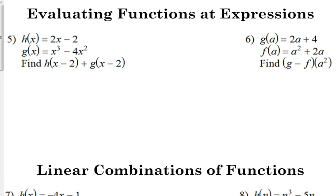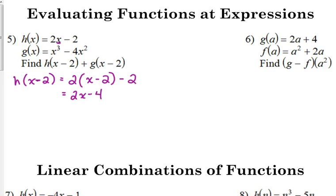Let's do H of X minus 2. Just like if we were plugging in 6, we're going to plug in X minus 2 — we replace the X in the equation with X minus 2. We need to distribute the 2: 2X minus 4, and then combine the negative 4 and negative 2, so that's 2X minus 6. That is H of X minus 2.